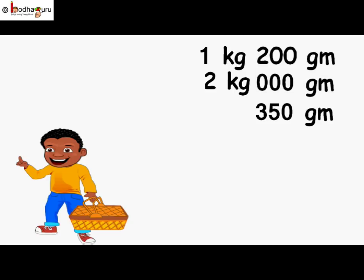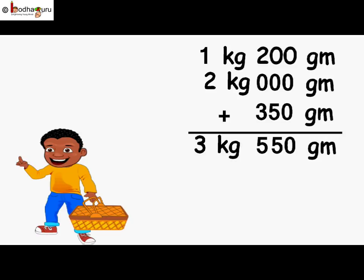Let us find that. We write gram below gram and kg below kg. We start addition from the right side. 0 plus 0 plus 0 is equal to 0. 0 plus 0 plus 5 is equal to 5. 2 plus 0 plus 3 is equal to 5. Now we add the kg part. 1 plus 2 is equal to 3. So total is 3 kg 550 gram Jinu is carrying.